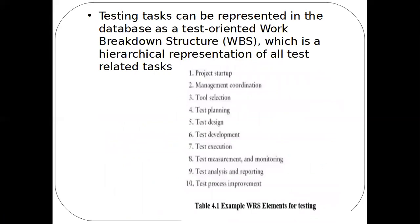The next topic is testing tasks represented using WBS. An example of WBS for testing-related tasks: we can have 10 high-level tasks, each divided into low-level tasks. For example, taking a tool selection high-level task, the low-level tasks are: what tools are there, how to select the tool based on reliability, how to provide it, and how to execute it. These are the steps followed in the low-level tasks, which is the WBS for testing.